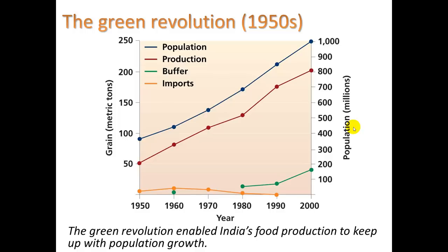We have this Green Revolution in the 1950s, which addressed a lot of this malnutrition. The Green Revolution techniques were developed in the West — a lot of them in the US — and then transferred to developing countries like India, places in Central America, and Africa. Here we see in India how population has risen but so has food production. India is now on its way to becoming the largest country in the world in a couple of decades.